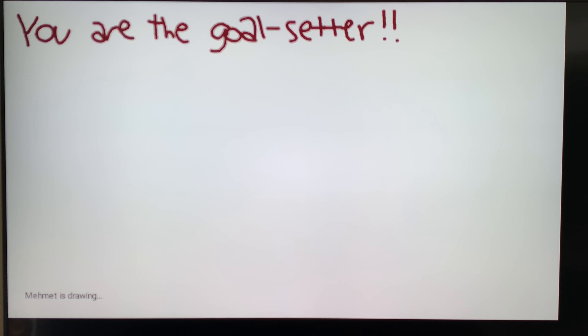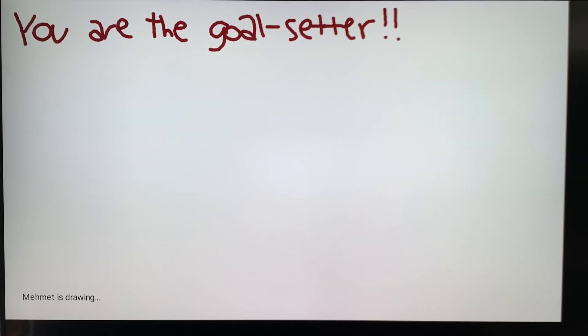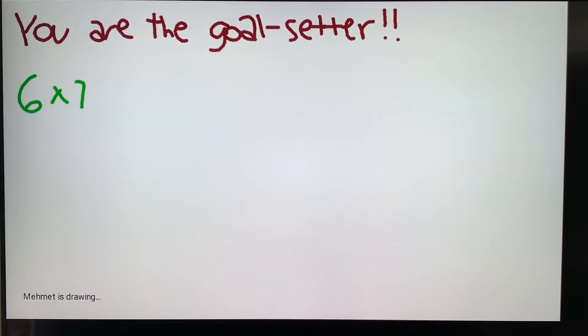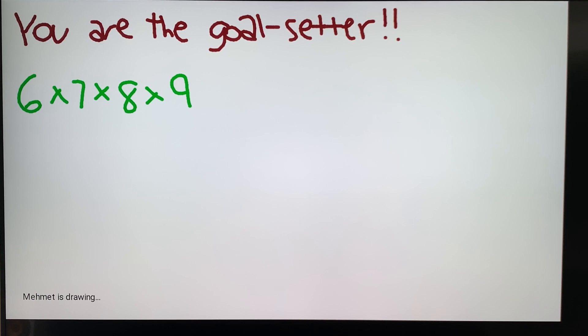So, you're going to be doing 6 times 7 times 8 times 9. You're going to want to pair these numbers off to create a goal. So you could do 6 times 7 times 8 times 9. So your goal here would be 42 times 72.